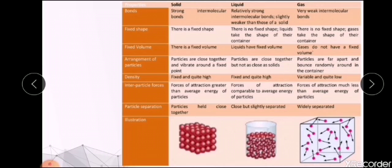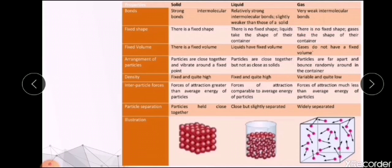When we come to shape and volume: solids have fixed shape and volume. Liquids don't have fixed shape but have a fixed volume, taking the shape of their container. Gases don't have shape or volume but can acquire the shape of the container they are taken in. Regarding the arrangement of particles: in solids, particles are very tightly packed and closely arranged. In liquids, intermolecular spacing is a bit more. In gases, particles are far apart and move in random motion.